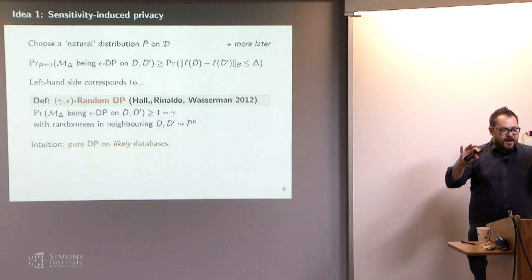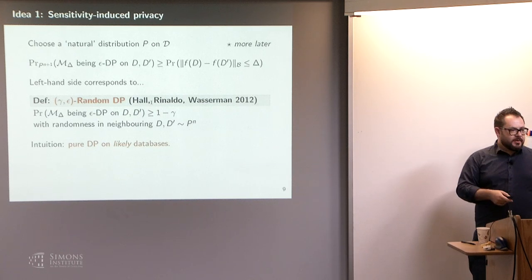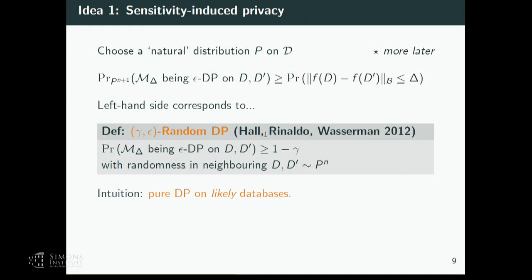If I have a distribution on data — I'll talk about where that comes from later — I can convert the sensitivity-induced private implication into a relation on two probabilities. If I draw databases according to P to the N+1 — neighboring databases drawn IID according to P — then the probability is upper bounded by this expression. That's nothing, just the implication written differently. The thing on the left is something that already exists — it's called random differential privacy. I've not called it RDP because there's a more recent definition sometimes called RDP.